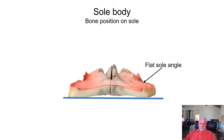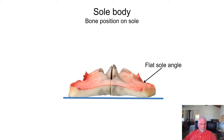A flat sole angle — notice this angle is flattening off here. What's flattening this is the palmar process of the P3 bone and some of the ungual cartilages further back in the foot. The bone is loading here. What tells me the bone is lowering in this position is the damage we see on this bar. The sensitive lamina on this foot has no color — it's crushed out, lacking nourishment. The P3 bone is doing that — the semi-lunar edge of the P3 bone is loading the bars through this area.